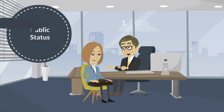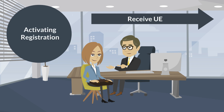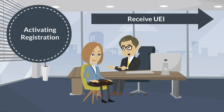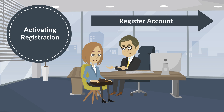Once all documentation has been validated, issuance of the UEI from SAM.gov can take one to three business days. Once you've received your UEI, your entity should log back into your SAM.gov account and begin to activate your annual registration. Failure to register your entity can affect your grant application status or hold up any grant funding due to pre-qualification requirements.